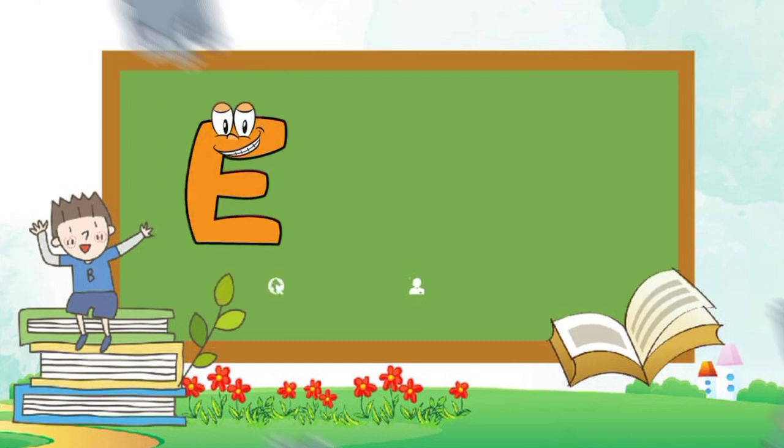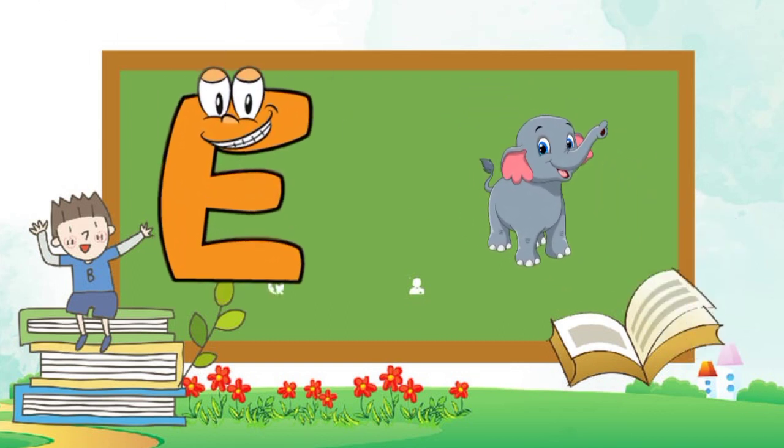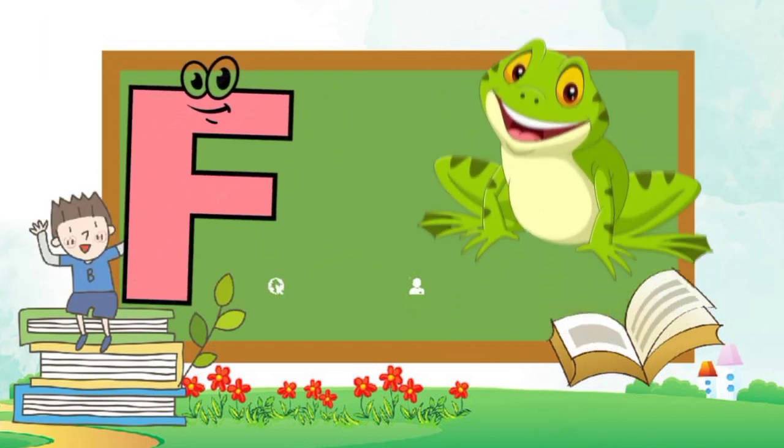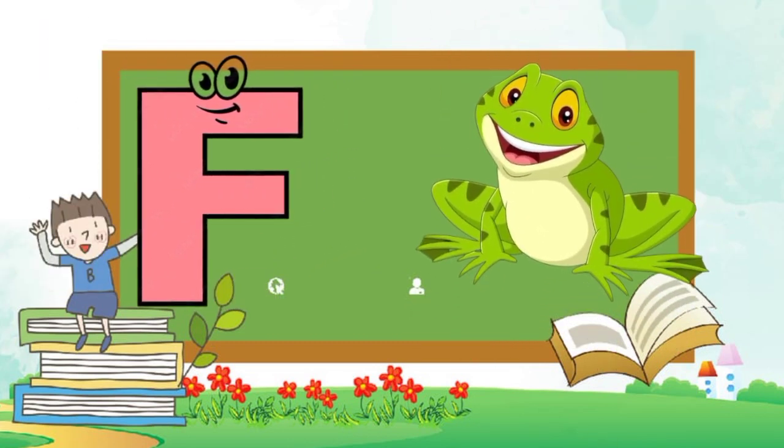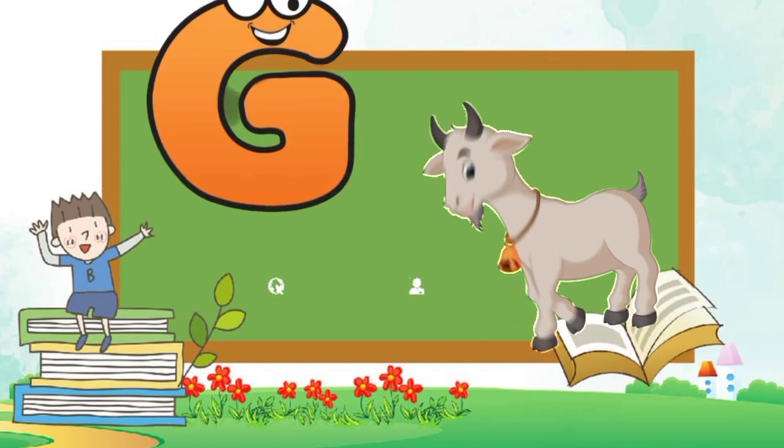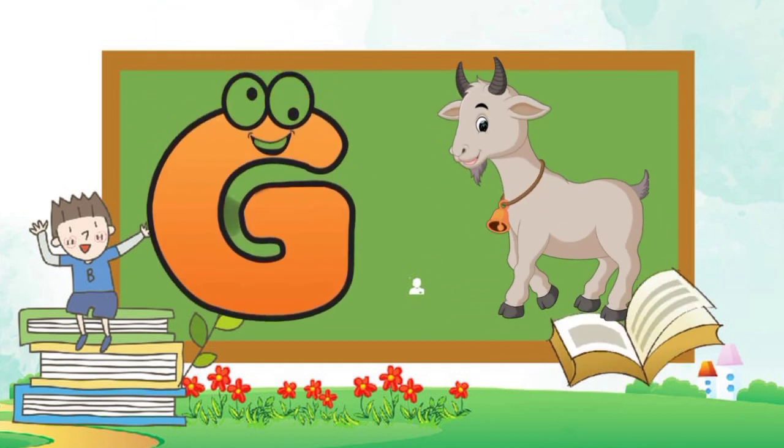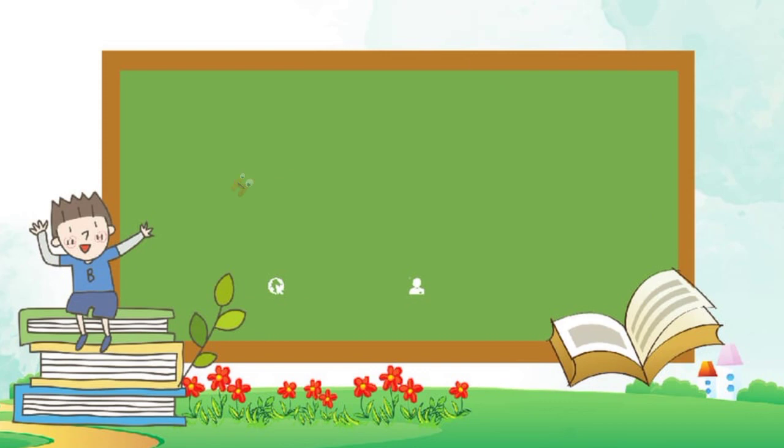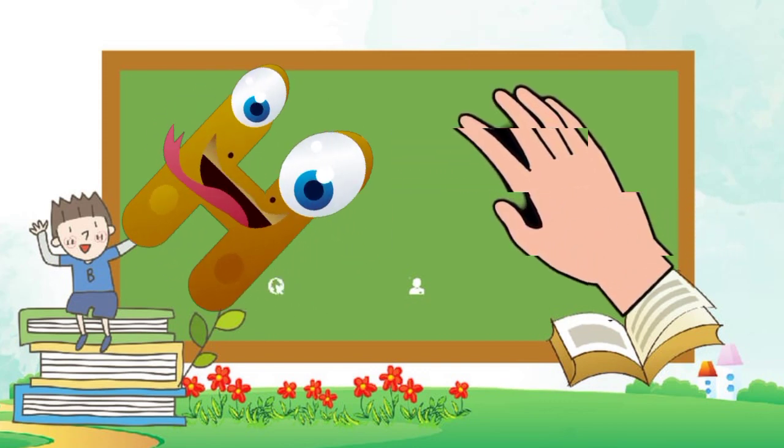E is for elephant, e-e-elephant. F is for frog, f-f-frog. G is for goat, g-g-goat. H is for hand, h-h-hand.